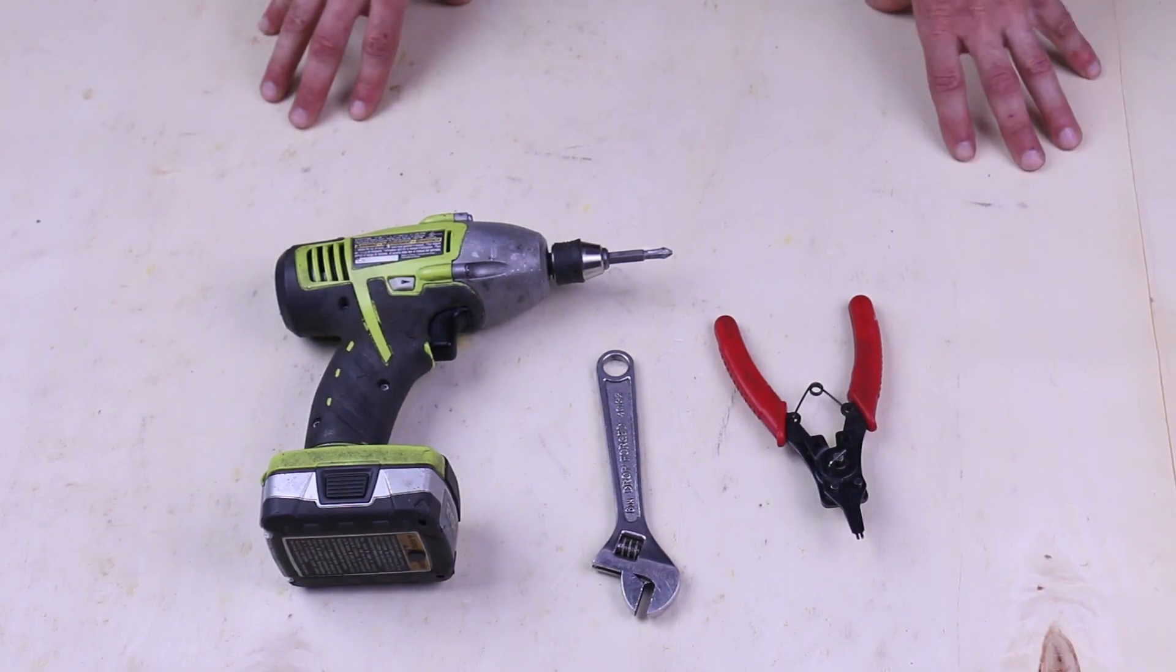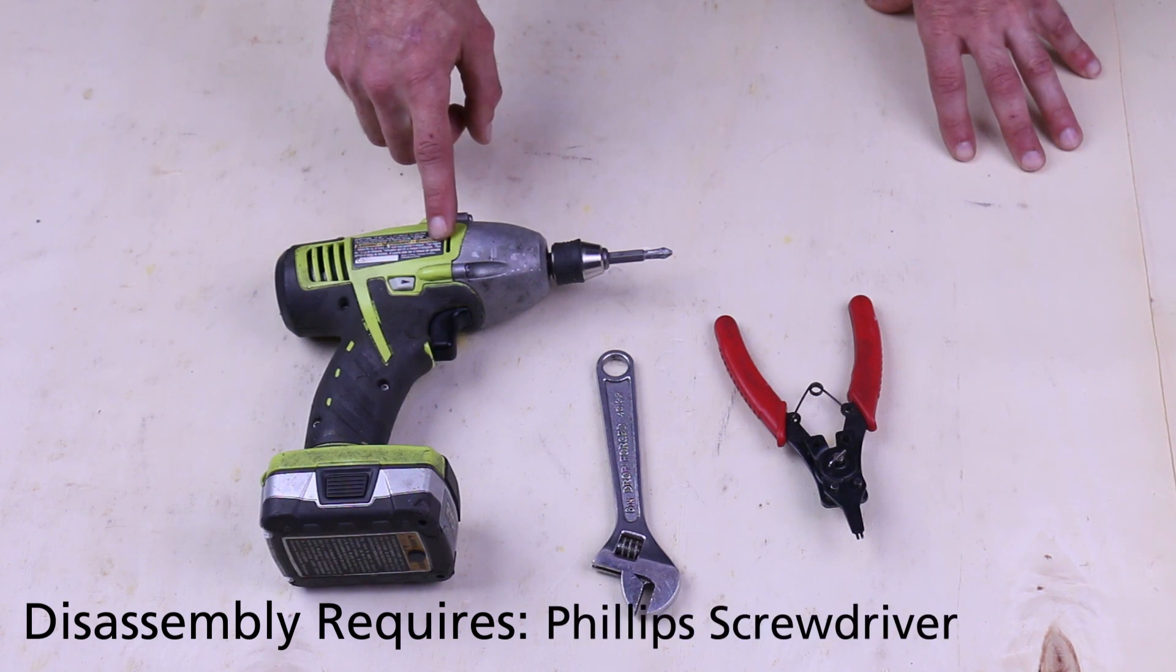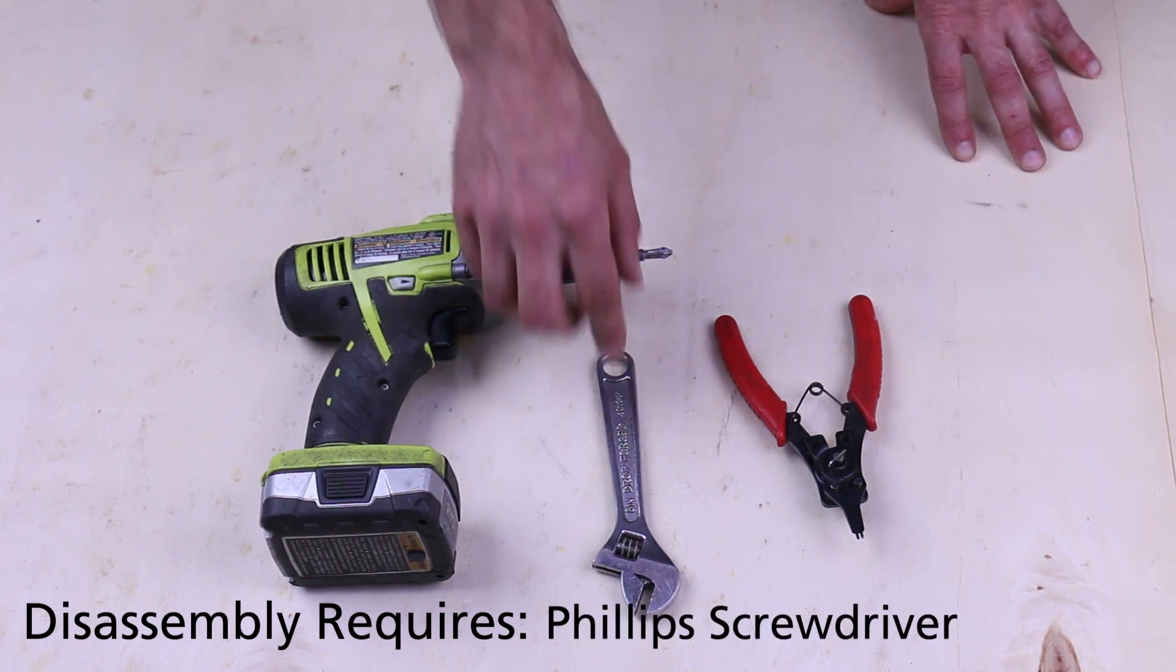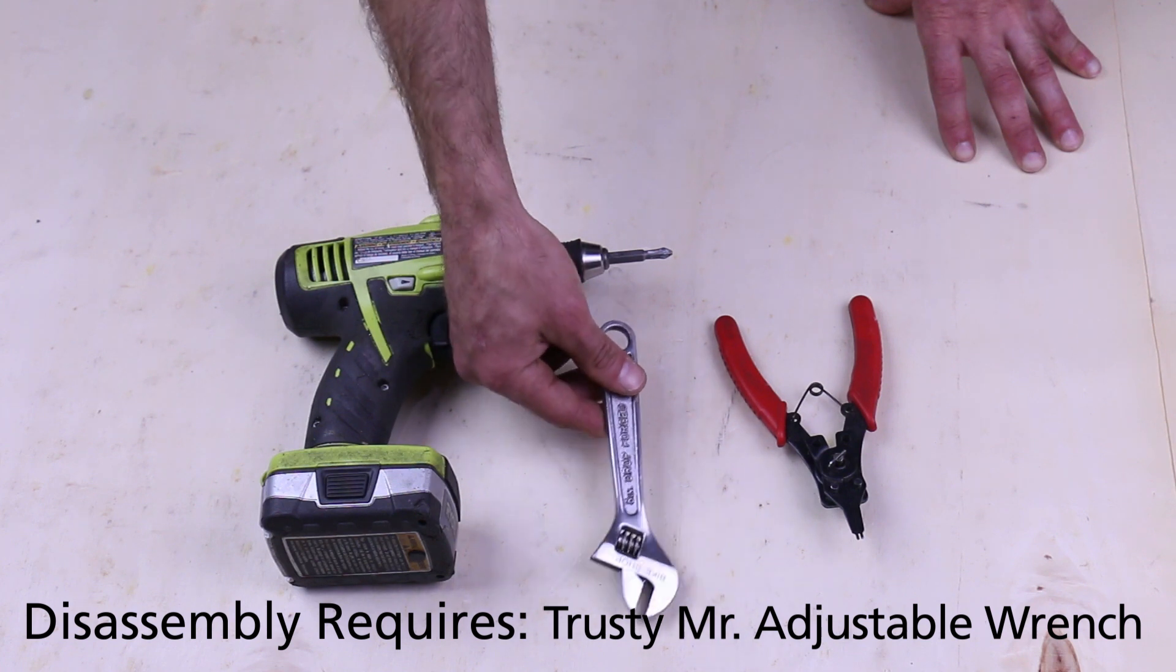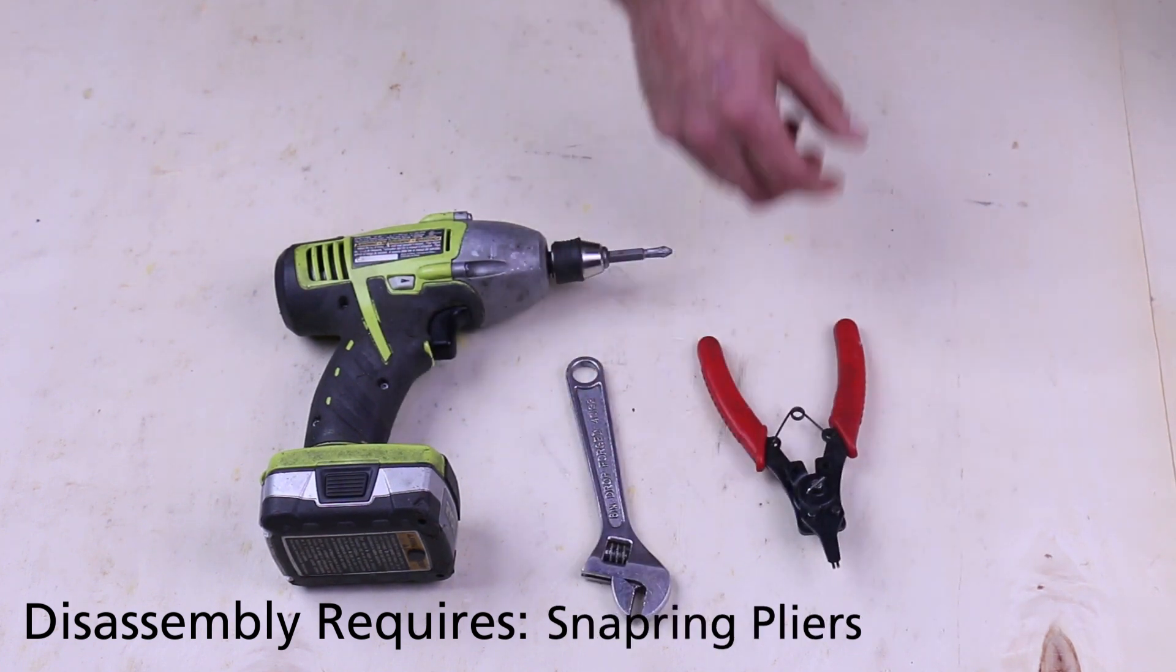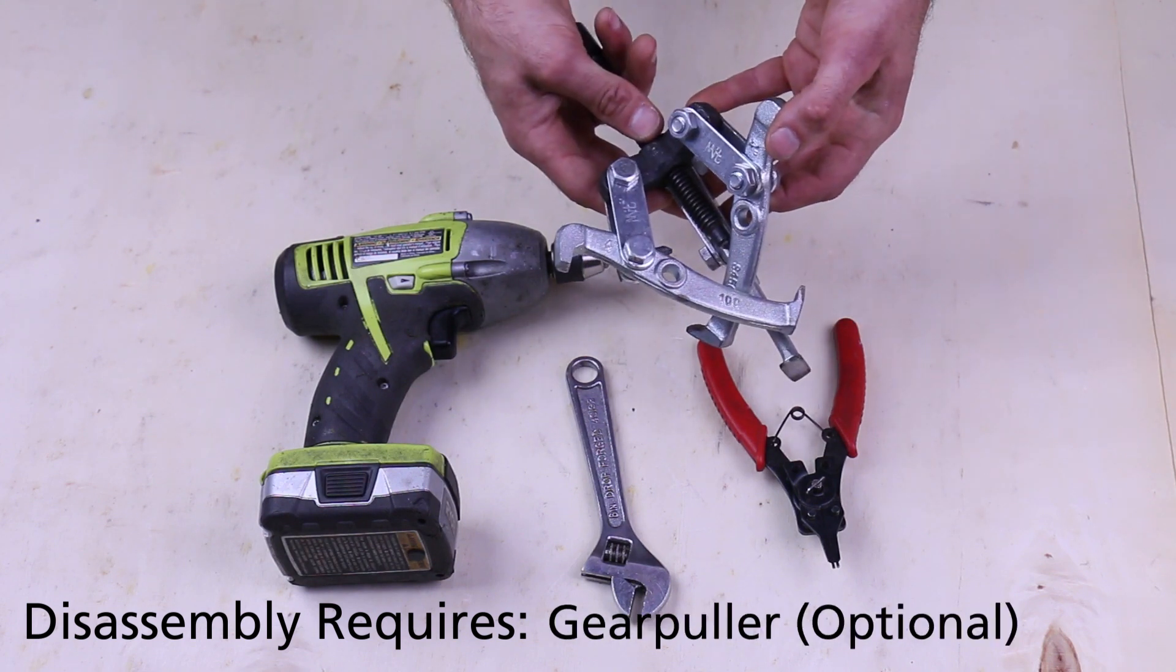These are the tools that you would need to do the disassembly. Number two Phillips and a driver or just a hand screwdriver, a wrench to either remove the wheel from the motor or just the nuts, snap ring tool, and you can optionally use a gear puller if you need it.